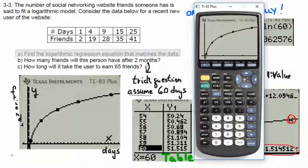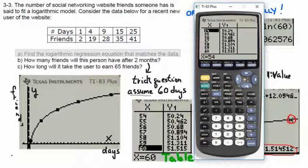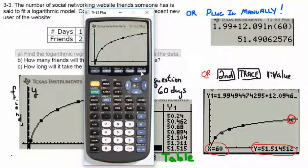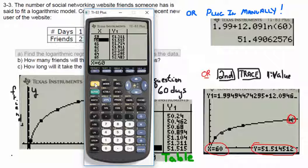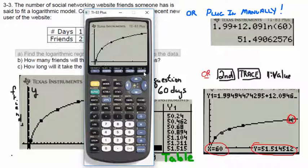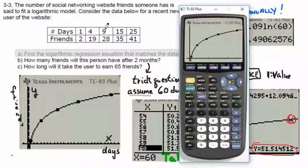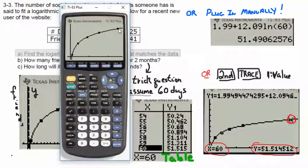The question was, how many friends will I have after two months? I assumed that was 60 days. You could go second graph, which gives you the table — cycle through and at 60 days it looks like 51.15. Or you could ask the spider. Go back to your graph — sometimes the table only shows whole counting numbers. We want 60, but right now we're only going 25 to the right. We need to go 60 or more to the right, so we'll have to monkey around with the window — let's go 75.